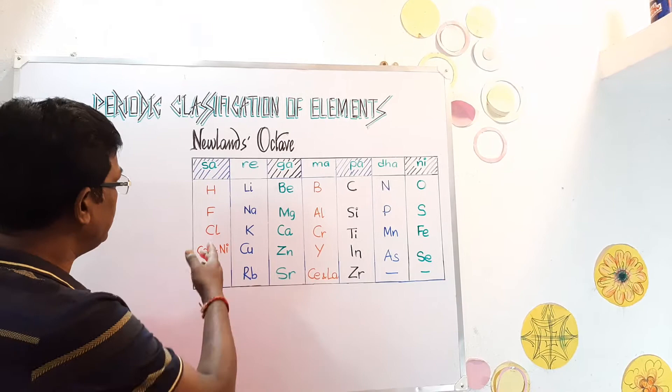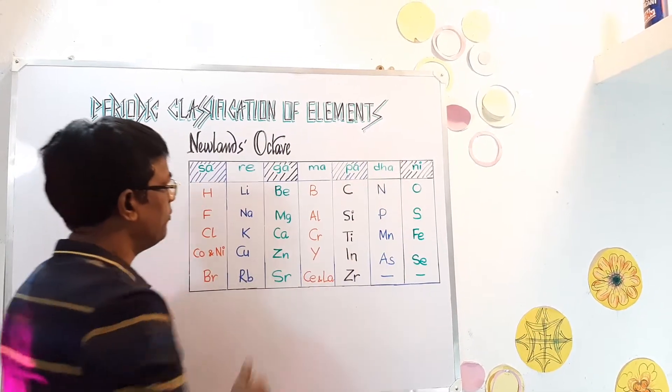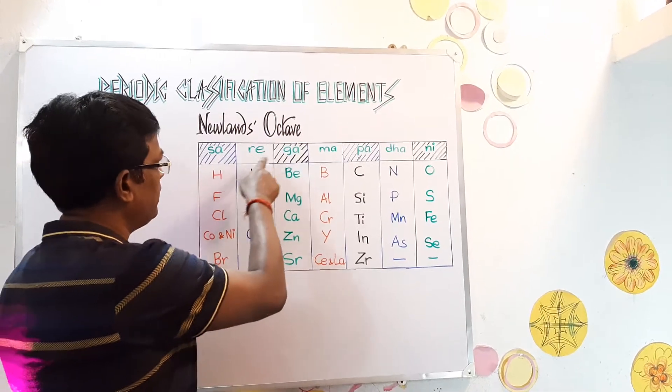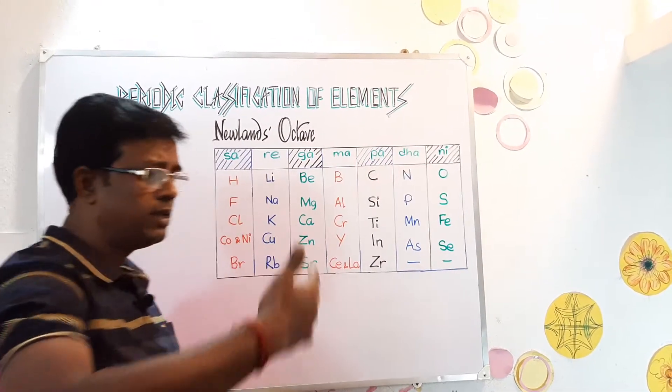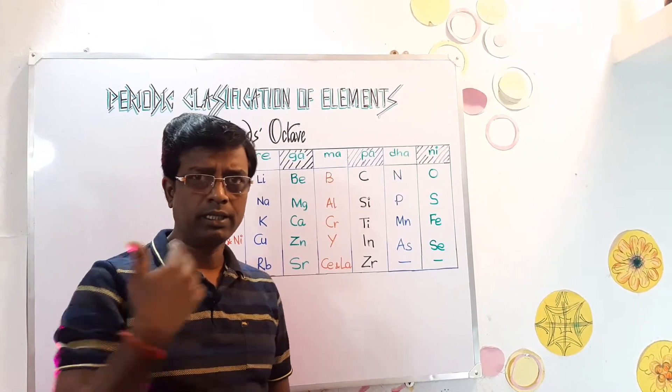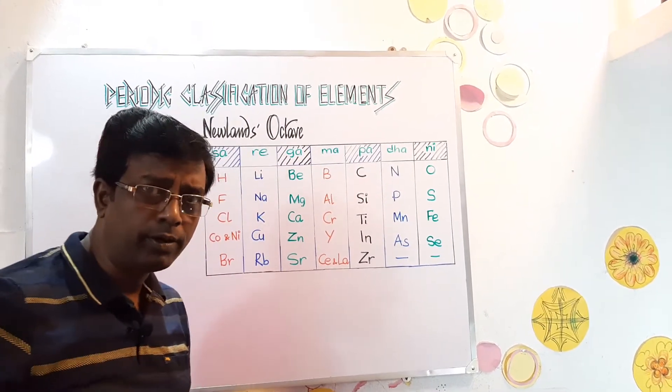And one more thing, like in music we know there are 7 musical notes Sa, Re, Ga, Ma, Pa, Dha, Ni. After that the notes keeps on repeating Sa, Re, Ga, Ma, Pa, Dha, Ni. And it keeps on repeating.